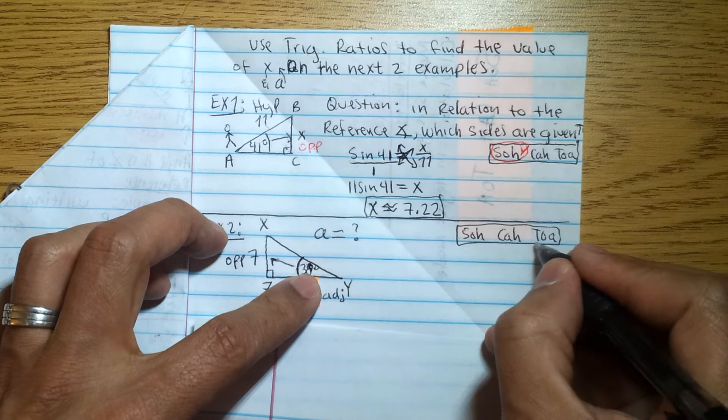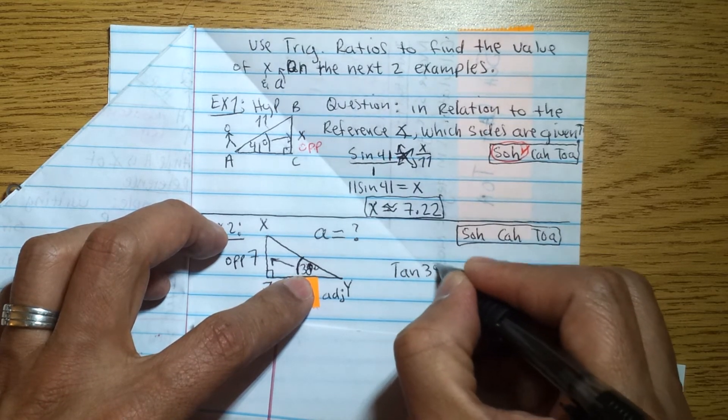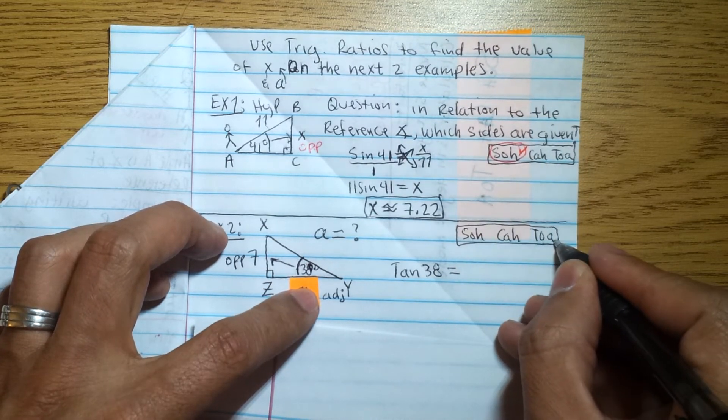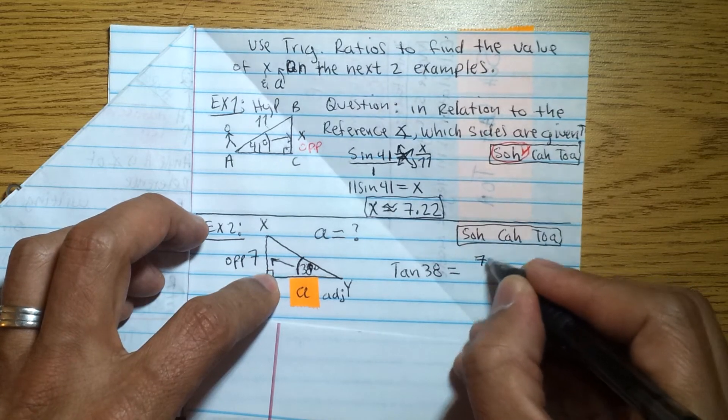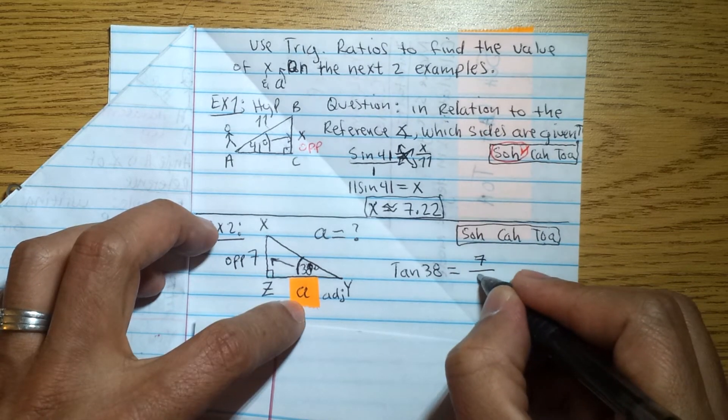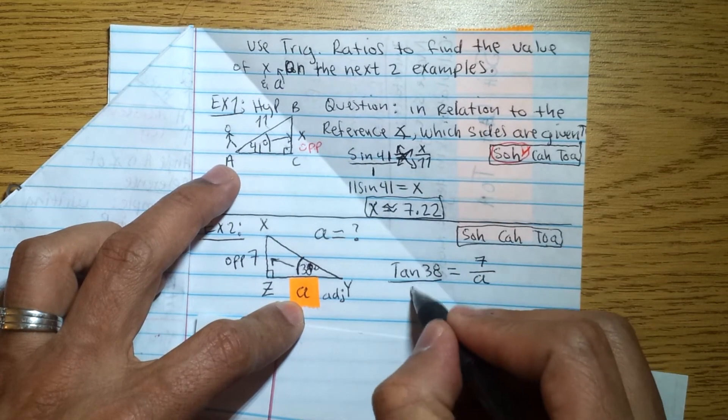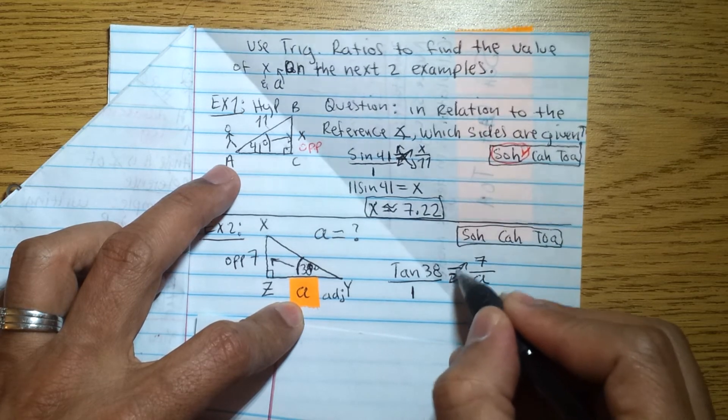So that will be tangent of the angle, which is 38 degrees. Tangent of 38 equals tangent is opposite over adjacent. So opposite is 7, over adjacent, that's A. And then we do the same as we did on the previous example. We're going to cross multiply. It's a proportion, so we just cross multiply.